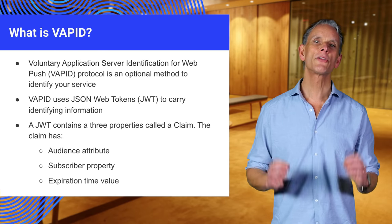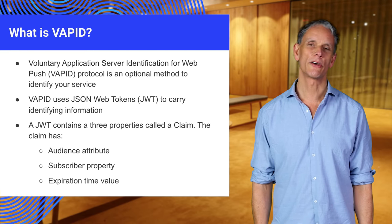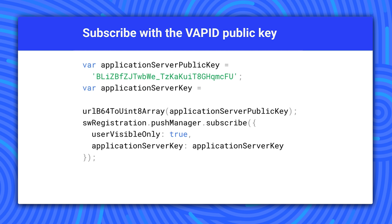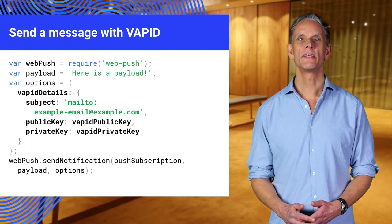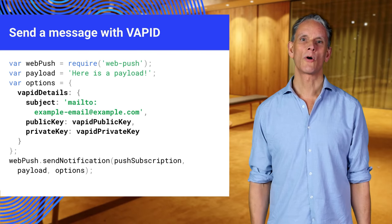An application server is further able to include additional information that the operator of a push service can use to contact the operator of the application server. To use VAPID, we need to generate a public-private key pair and subscribe to the push service using the public key. The public key must first be converted from URL base64 to a Uint8Array, then passed into the applicationServerKey parameter in the subscribe method. The web-push library provides a method generateVapidKeys which generates the keys — this should be used once in the command line: web-push generate-vapid-keys --json, and the keys stored somewhere safe. We can use the web-push library to send a message with the required VAPID details by adding a vapidDetails object in the options parameter.